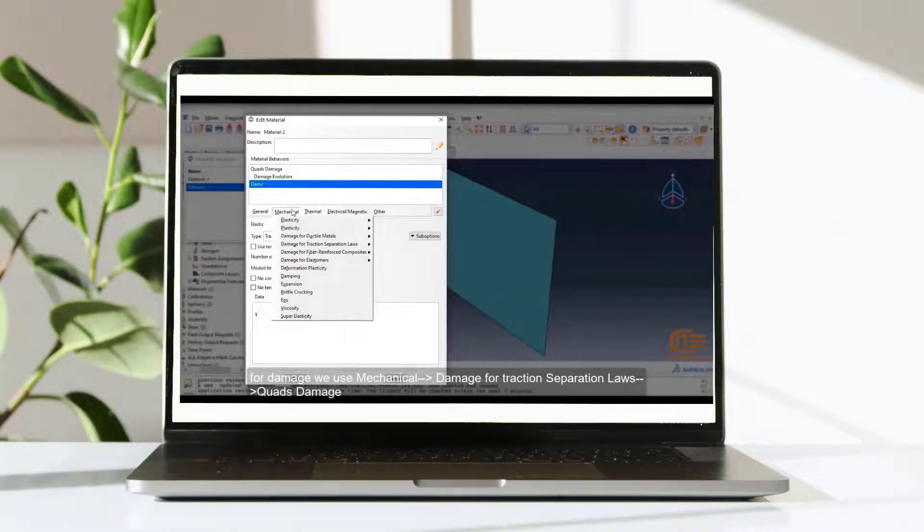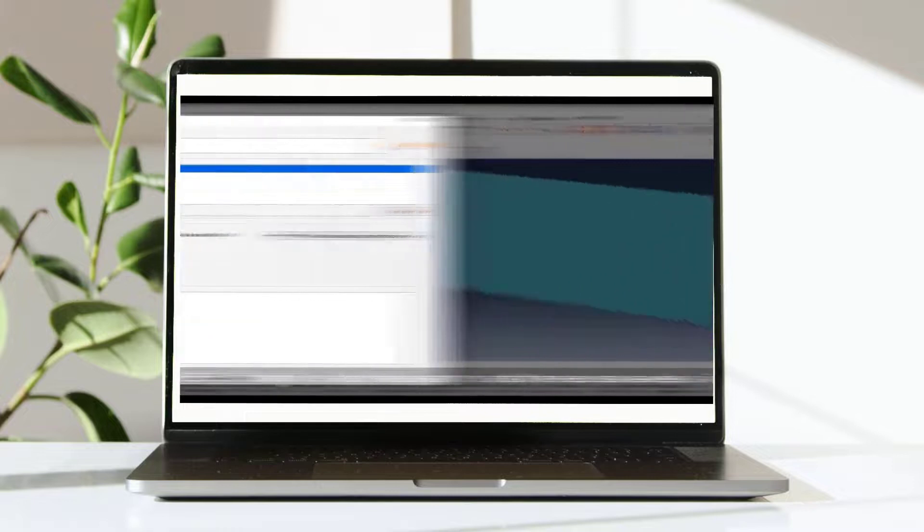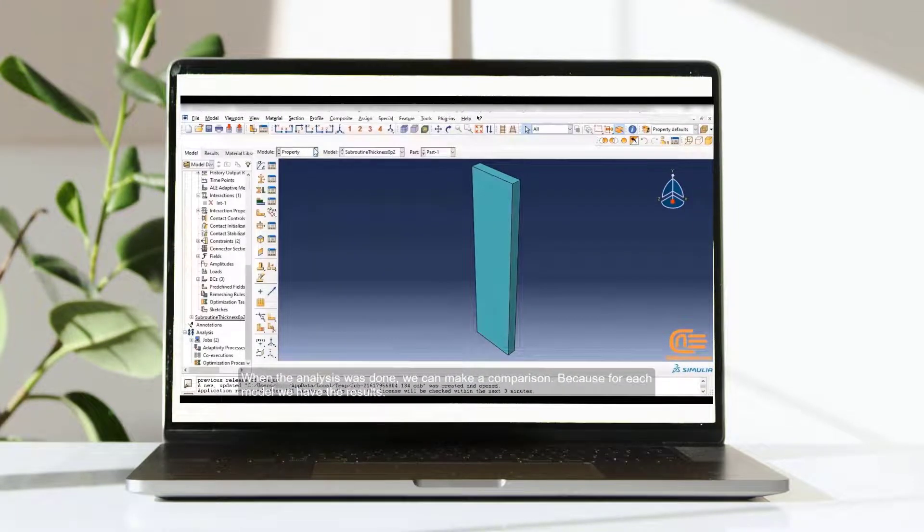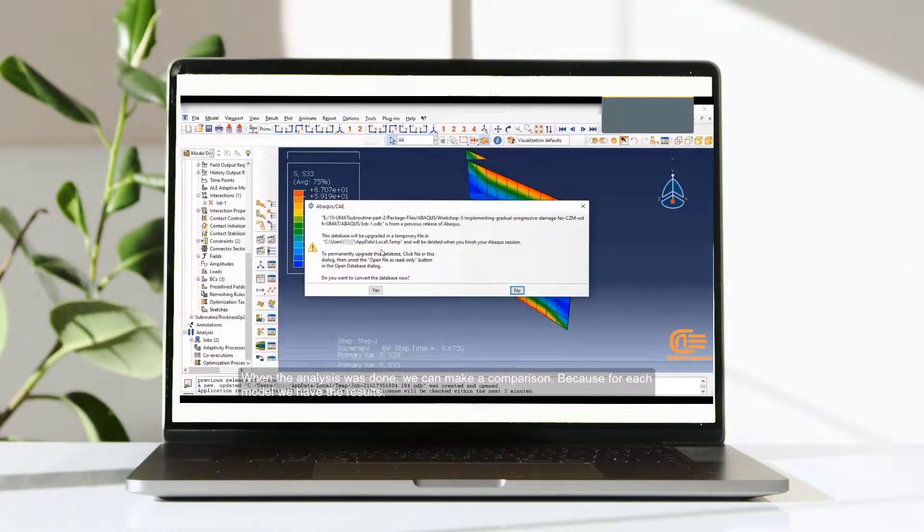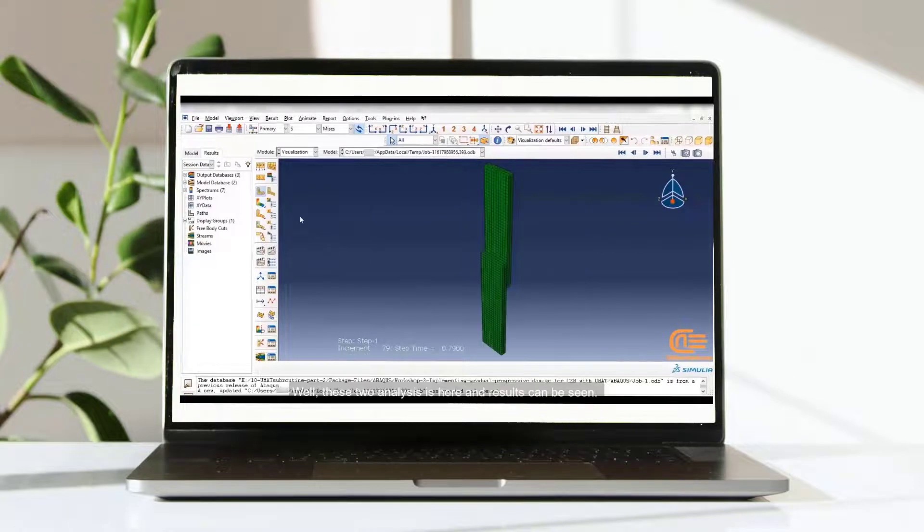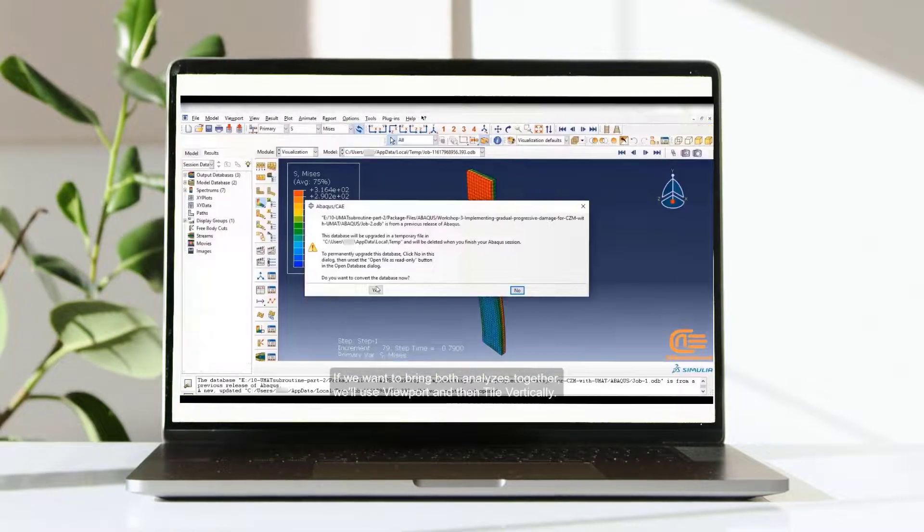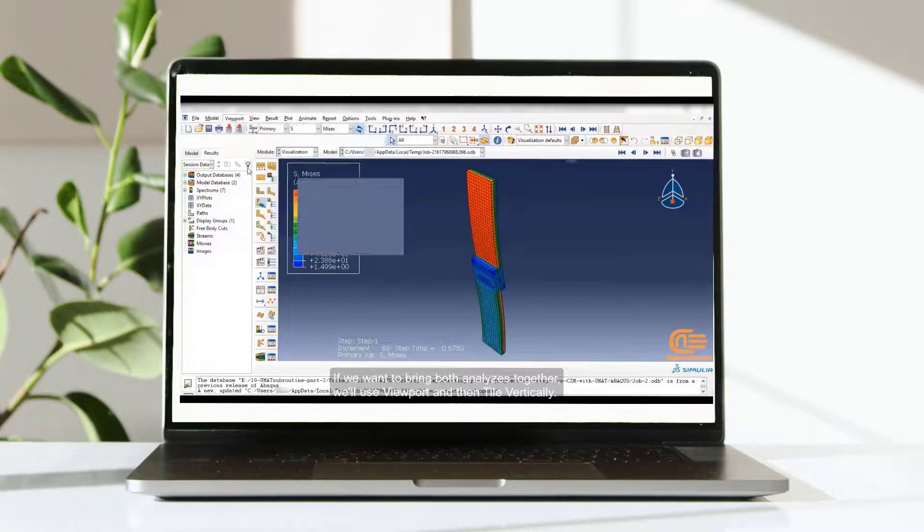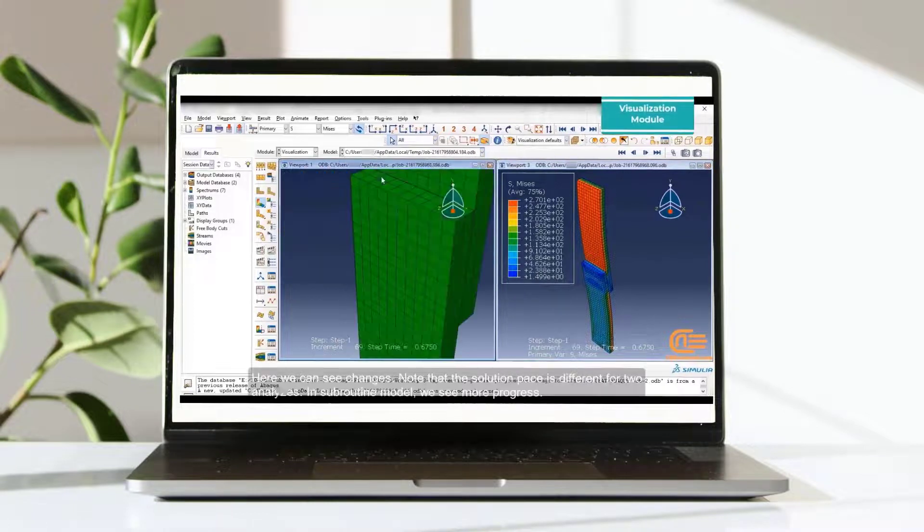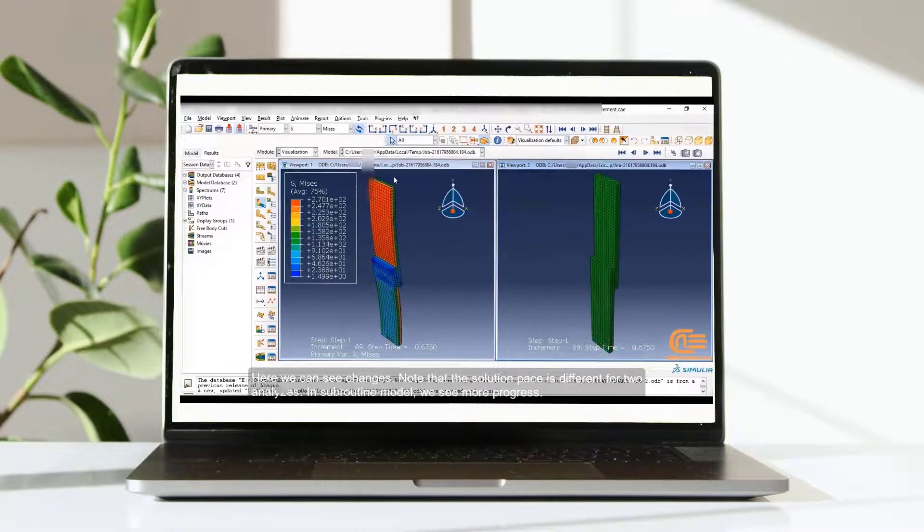For damage property, we use mechanical damage for traction separation loss. Quads damage. Because damage is started by quadratic equation stress. When the analysis was done, we can make a comparison. Because for each model, we have the results. Well, these two analyses is here, and results can be seen. If we want to bring both analyses together, we'll use viewport and then tile vertically. Here we can see changes. Note that the solution pace is different for two analyses. In subroutine model, we see more progress.